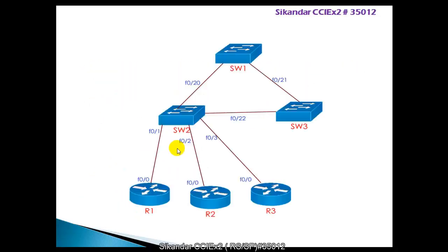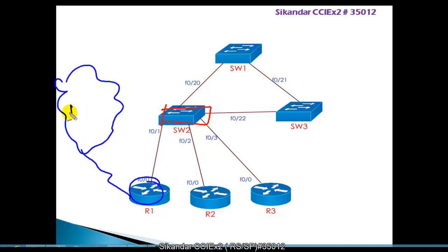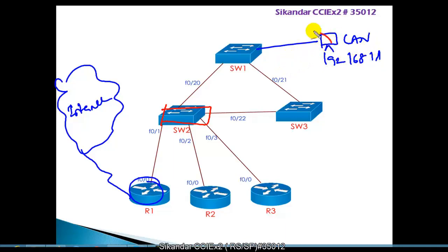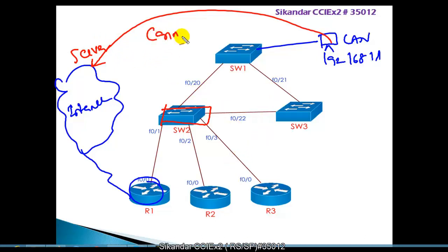Let's take an example with a production network diagram. There is a user connecting through Router 1 to the internet, and a LAN user at IP 192.168.1.1 who is unable to access the network or internet. A basic troubleshooting step is to ensure connectivity is intact. To understand connectivity, you need proper documentation showing how devices are connected, their names, and IP addresses.